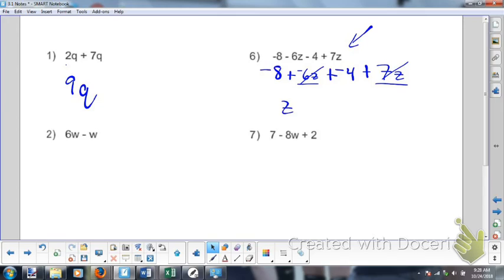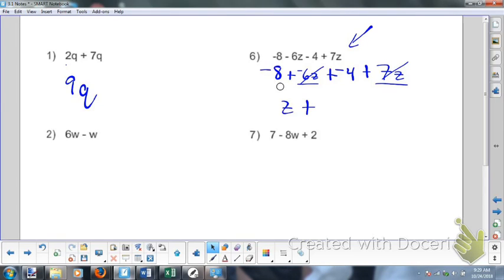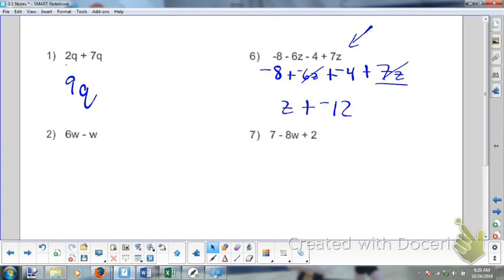I'm crossing out my terms as I use them. Plus now I have negative eight, negative four. They have the exact same variables. There is none. Right? So these are like terms. So these two together are going to give me negative 12. And I have collected like terms.